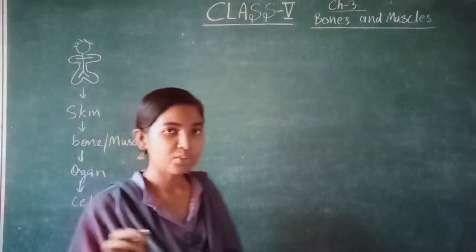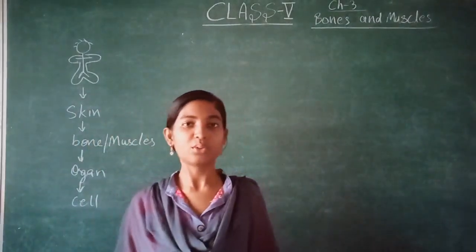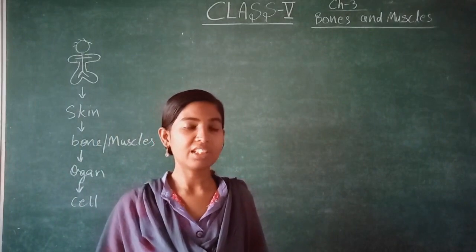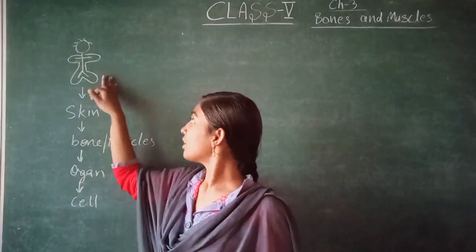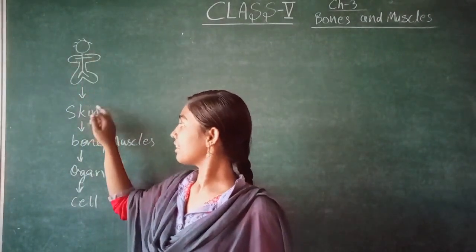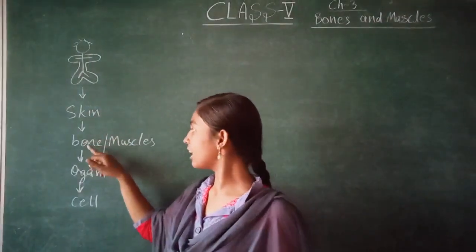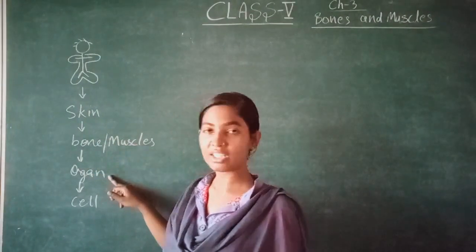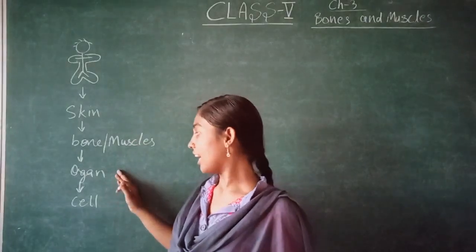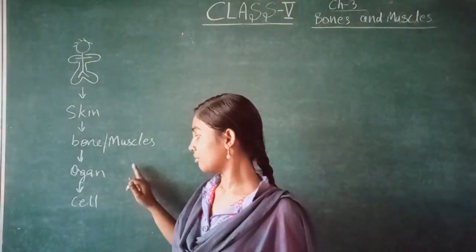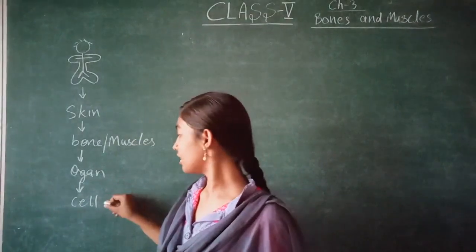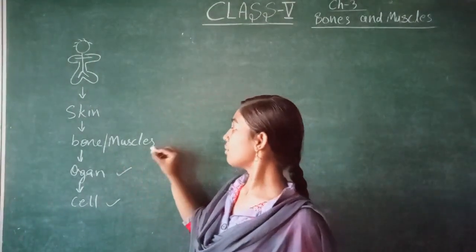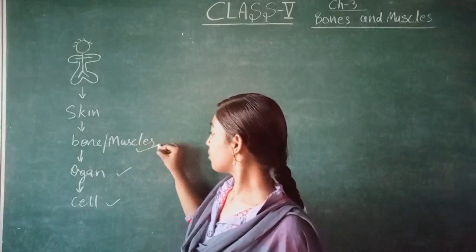Hello everyone. Today we are going to know more about the human body. We have seen in our last class that our body is covered with skin, and under the skin there are bones and muscles, and under the bone, organs and organ systems are present, and this organ system is made up of cells. We have seen cell, organ and organ system. Now we will see bone and muscle.